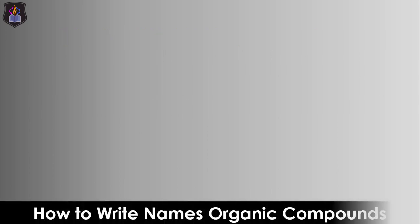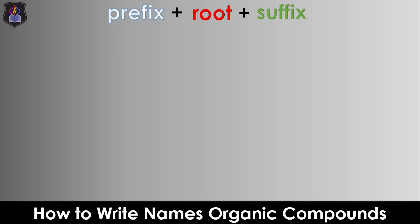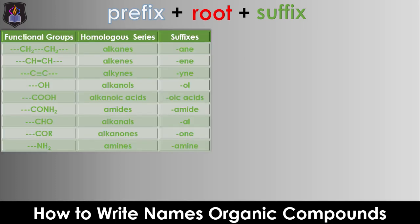The name of a typical organic compound follows the general formula: prefix + root + suffix. The suffix is obtained from the principal functional group present in the longest or parent chain of the molecule. The number of carbon atoms and their corresponding compound defines a homologous series or family of organic compounds. The table on the screen shows some functional groups with their corresponding homologous series and suffixes.